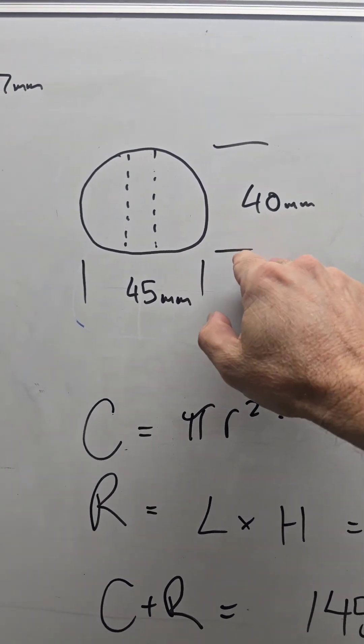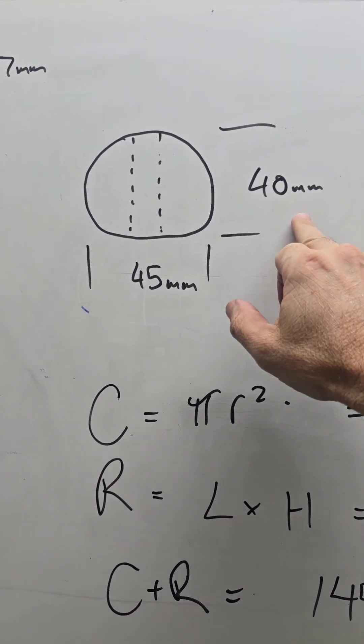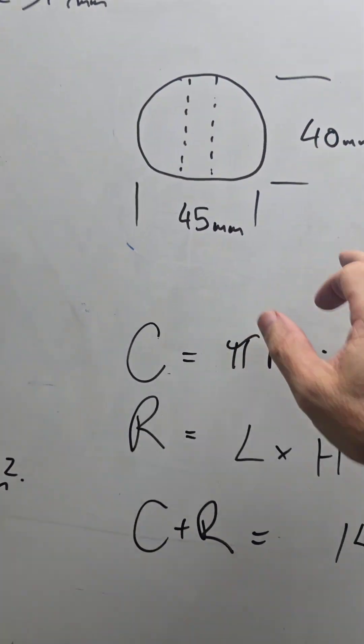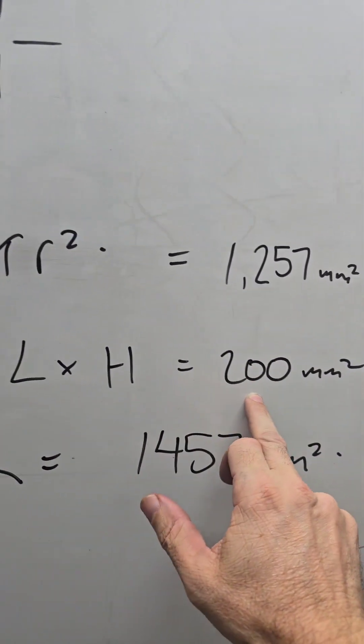So the circle's diameter is obviously 40mm. We're just minus 40 from 45. That'll give us a 5 width by 40 for our rectangle. And that's what we've done here.